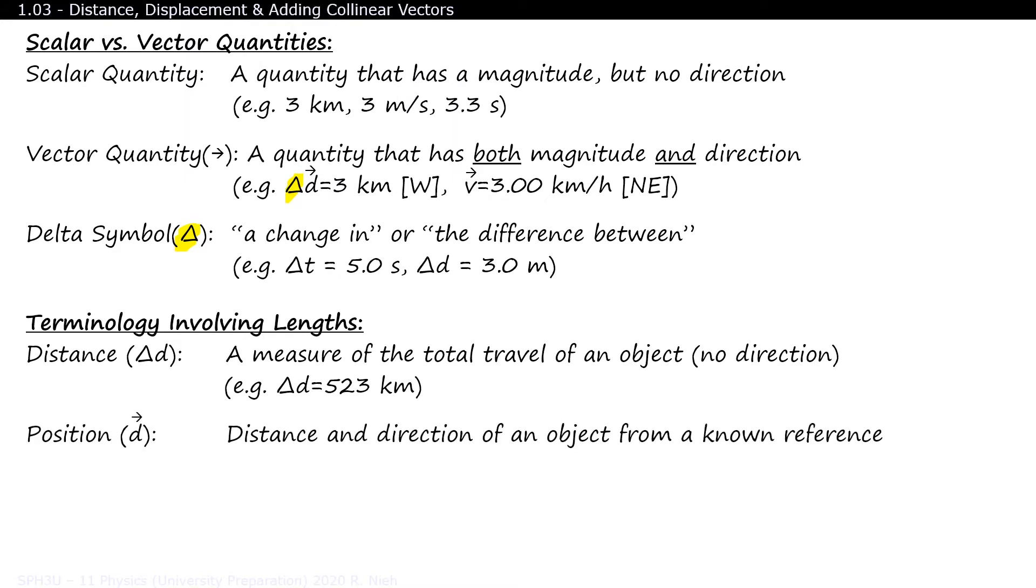Position is where you are located, in reference to a known location. Kind of like latitude and longitude in geography. For example, your toothbrush is located 1 meter north of the faucet. Since position is a vector quantity, that's why there's an arrow on top of the letter D.